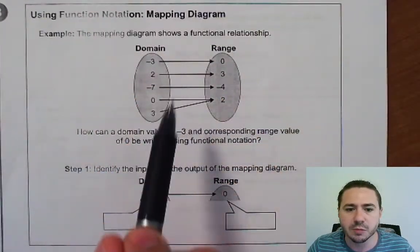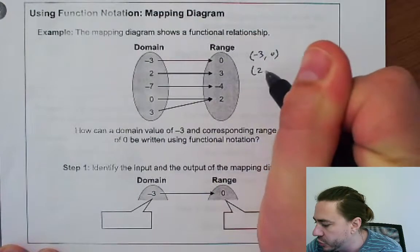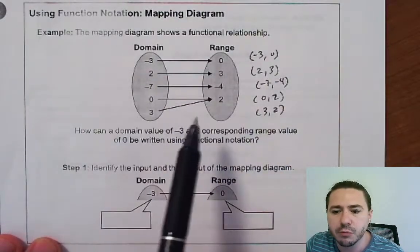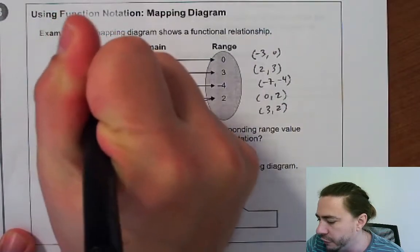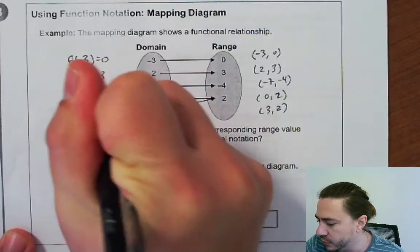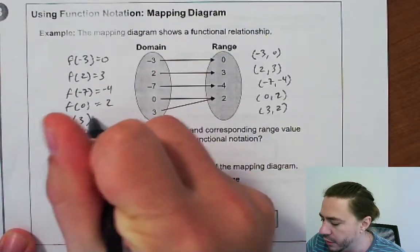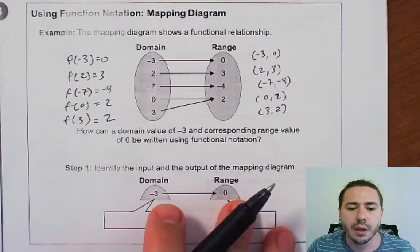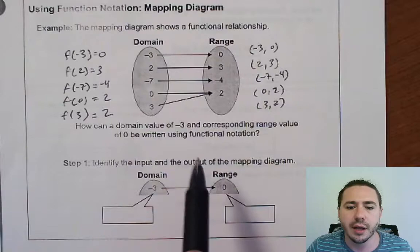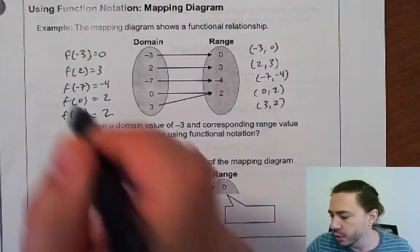Here's a domain and range example. If we list these as coordinates: (−3, 0), (2, 3), (7, −4), (0, 2), (3, 2) — we could write those same relationships using function notation: f(−3) = 0, f(2) = 3, f(−7) = −4, f(0) = 2, and f(3) = 2. How can a domain value of −3 and corresponding range value of 0 be written using function notation? The elements in the domain are your inputs and the range values are your outputs, so f(−3) = 0.